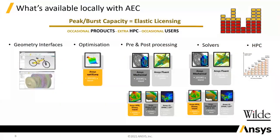Ansys Elastic Currency offers access to the whole Ansys portfolio. This includes geometry interfaces, optimization, pre-post, solvers and HPC packs. All items may be checked out on demand at a product-specific AEC per hour rate. This ensures that no matter what simulation requirements come up, you're equipped to handle it without committing to long-term license agreements. So if you mainly work in mechanical areas and get a job requiring a different physics, you can use your AEC to check out a Fluent license, for example, without committing to a long-term Fluent license.